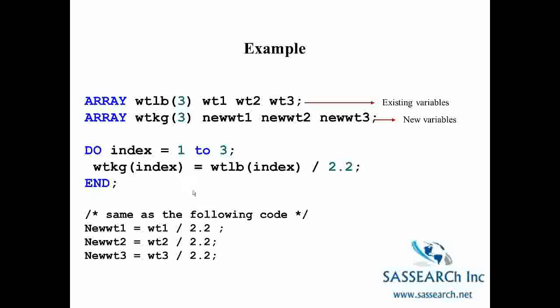And so this do loop is doing exactly what's being done using the code at the bottom of the slide, where we have new weight one equals weight one divided by two point two, new weight two equals weight two divided by two point two, new weight three equals weight three divided by two point two.